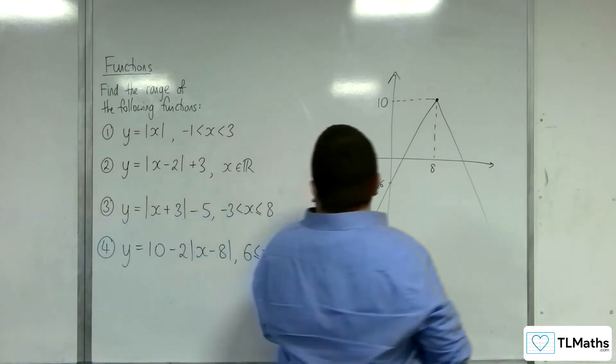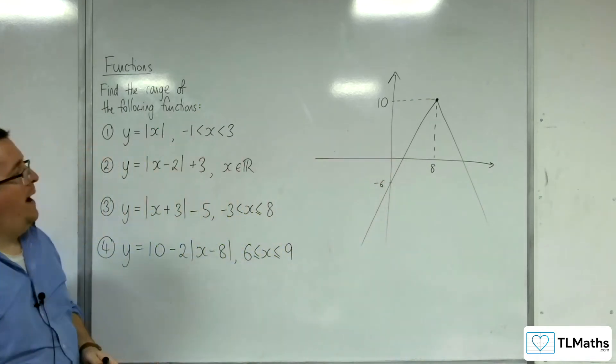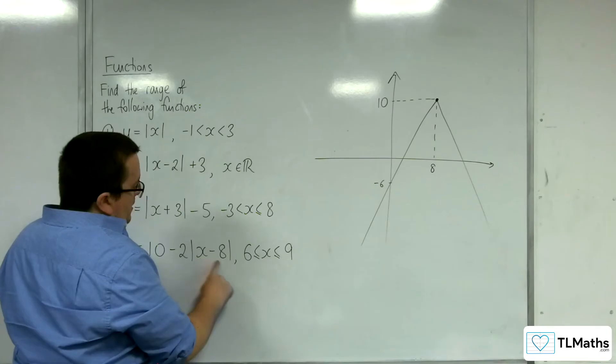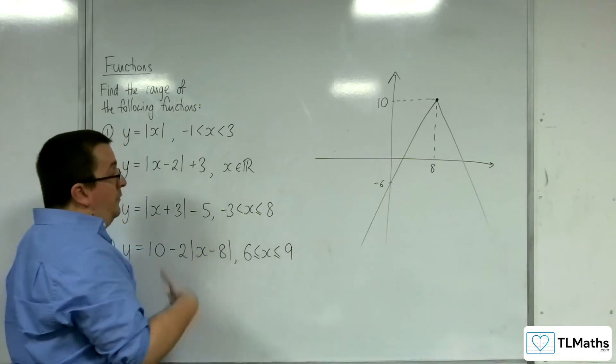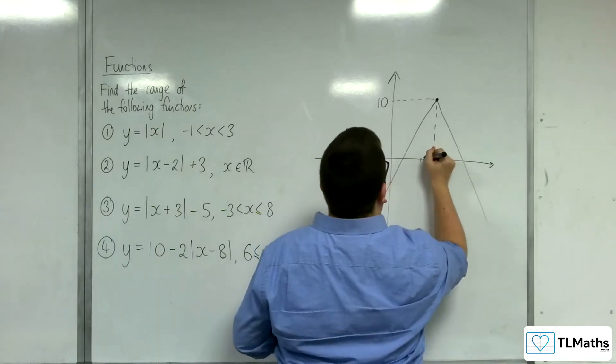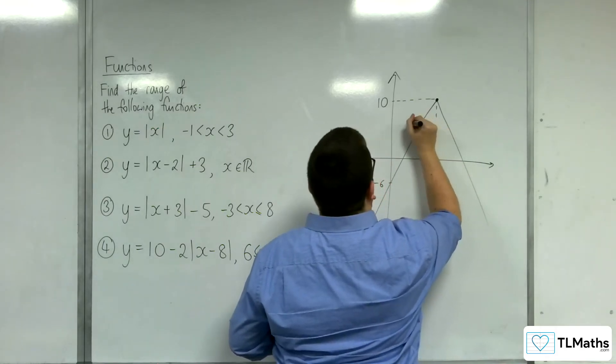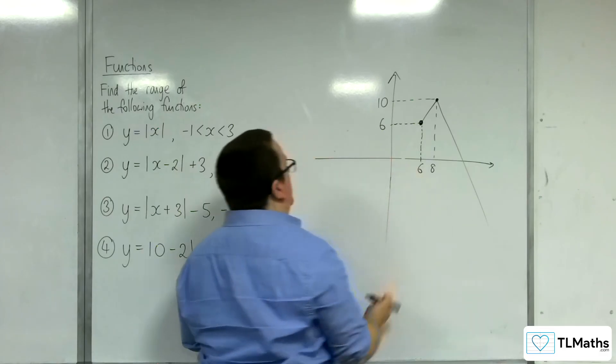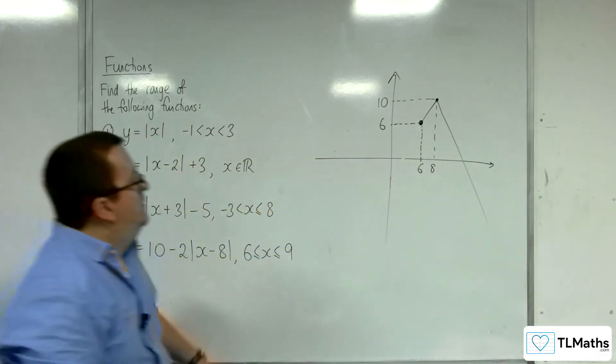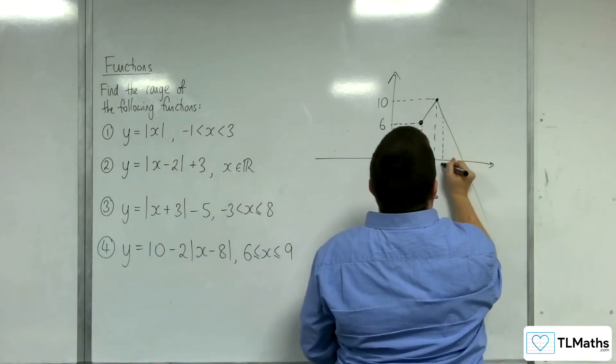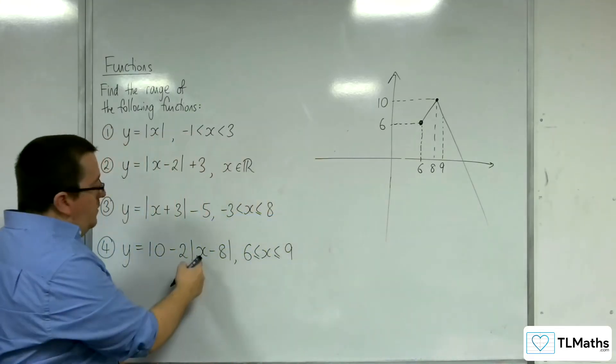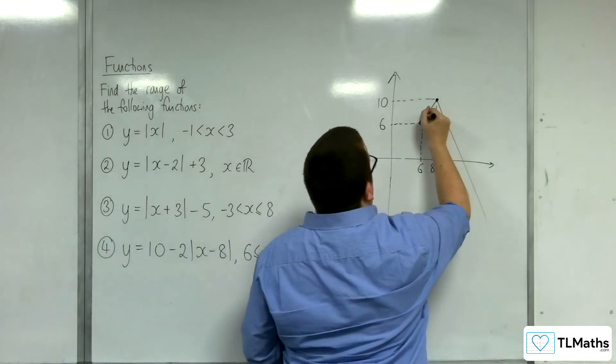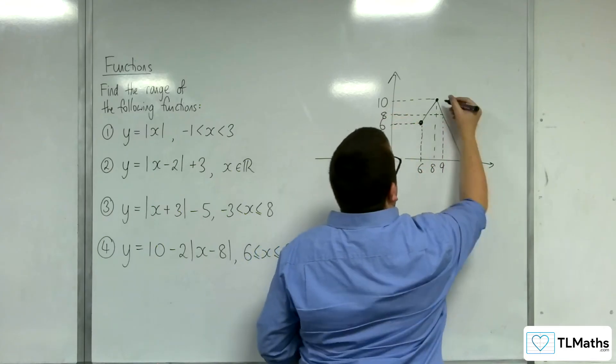If we're restricting the domain to 6 to 9, well, when x is 6, I'm assuming we're not the x-axis there. But when x is 6, we're going to get 6 take away 8, which is minus 2. Modulus is 2. 10 take away 4 is 6. Right, so at 6, we get 6. And then at 9, so pop in 9. So when x is 9, we get 9 take away 8, which is 1. Modulus of 1 is 1. 10 take away 2 lots of 1 is 8. So that point there is 8, and that's included.